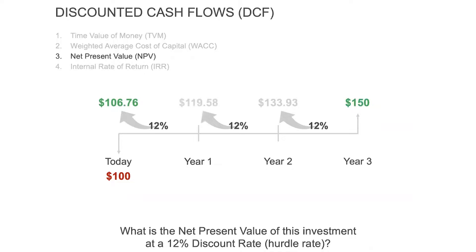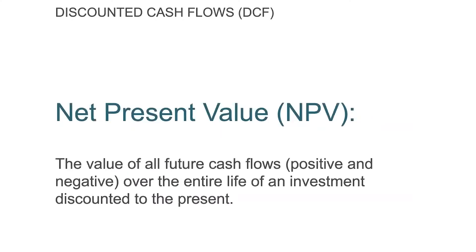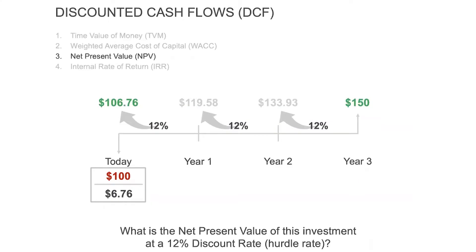This is where the concept of net present value comes into play. I'm going to take the present value of the cash inflows and outflows and net them against each other. In this case, that $106.76 of inflow minus the $100 going out as your initial investment gives a net present value of $6.76. That's the net present value — basically the value of all future cash flows, positive and negative, over the life of the investment, discounted to present day rates.